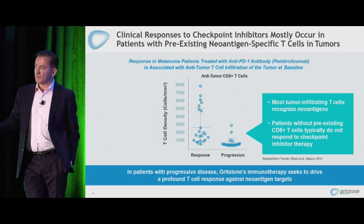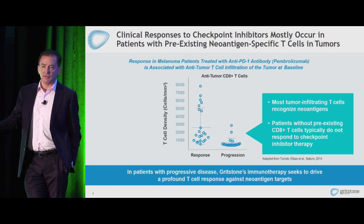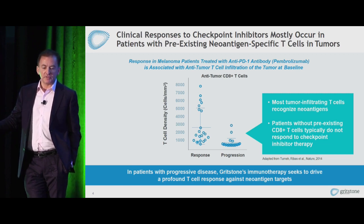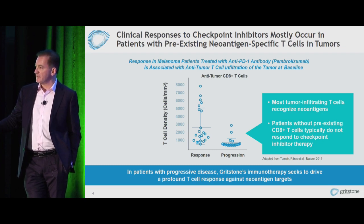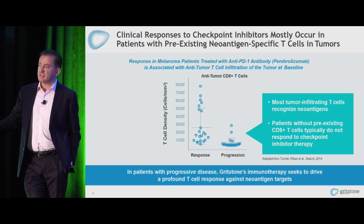Checkpoint inhibitors have transformed the way we think about solid tumor immunotherapy. But a persistent finding, exemplified by some early data from Tony Rebus's group at UCLA, is that patients who have large numbers of preexisting tumor-infiltrating CD8 T cells are the patients likely to respond well to checkpoint inhibitor monotherapy. You can see the melanoma patients being treated with PEMBRO — those with large numbers of tumor-infiltrating CD8 T cells have a good probability of response. The question becomes, how can we help the patients who don't have those large numbers of T cells? We now know that many of the T cells infiltrating tumors are specific to neoantigens within the tumor, and Steve Rosenberg has done a lot of pioneering work to demonstrate that principle.